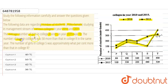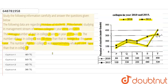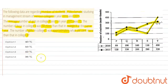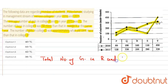The number of boys in college S was 58 more than that in college R in the same year 2015. The number of girls in college S was approximately what percent more than that in college R? We need to find what percent more girls are there in S compared to R. First, the average of girls in both colleges is given.